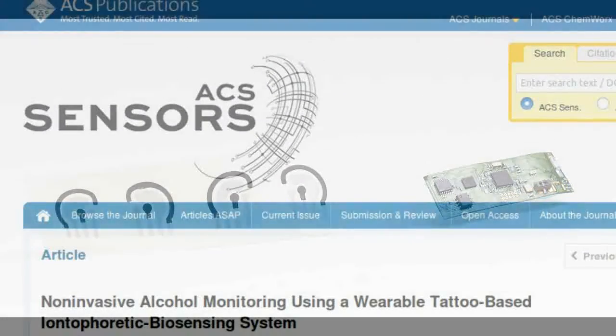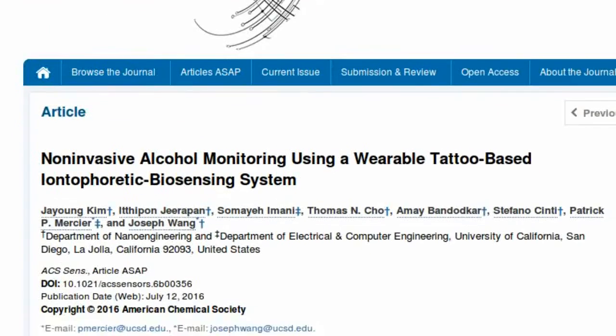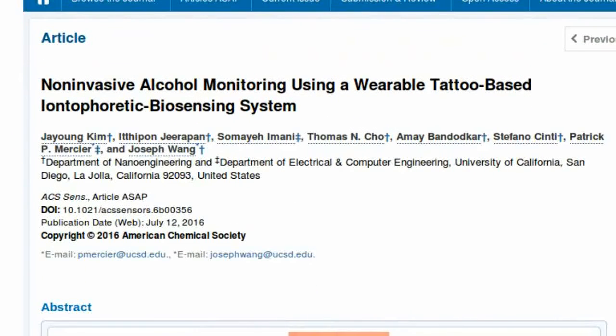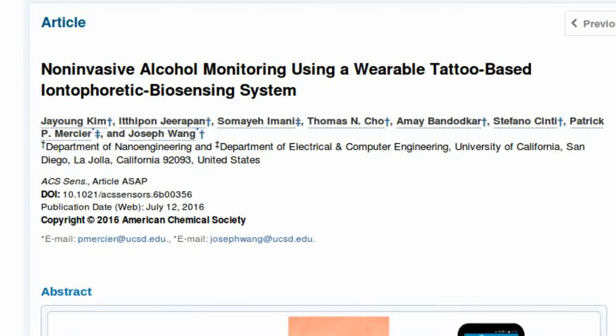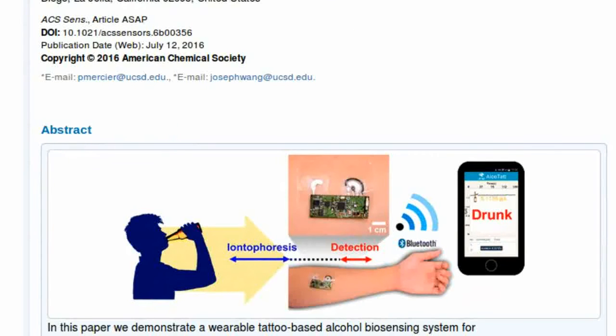On the other hand, the alcohol level in sensible sweat, the sweat that is typically seen, is a better real-time indicator of the blood alcohol concentration. But so far, the systems that can measure this are neither portable nor fit for wearing on the body.